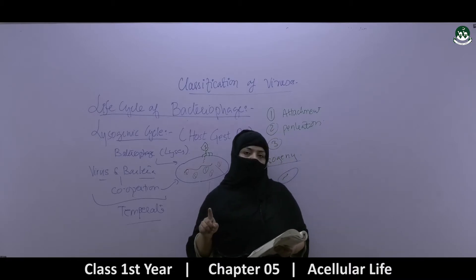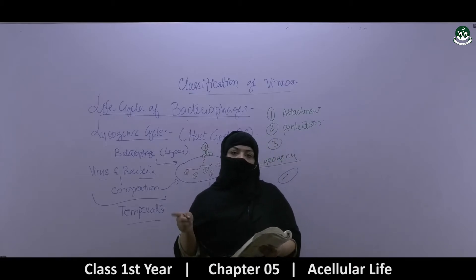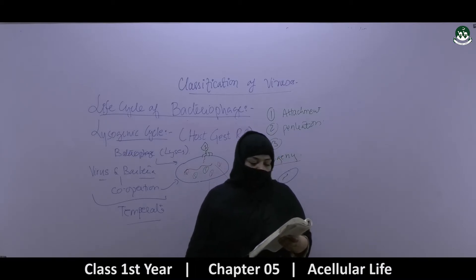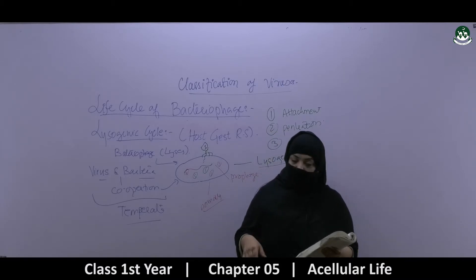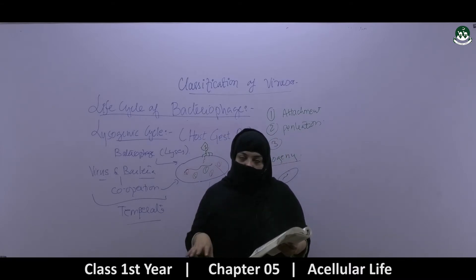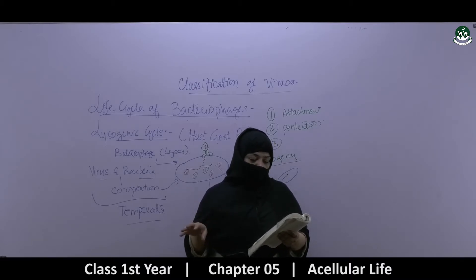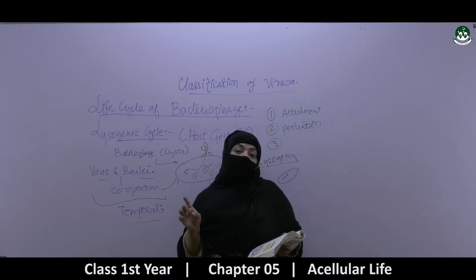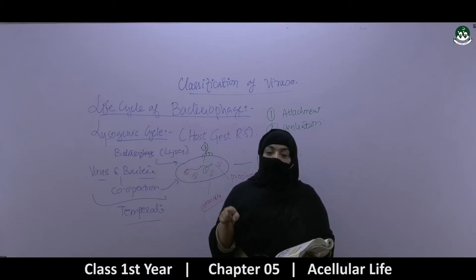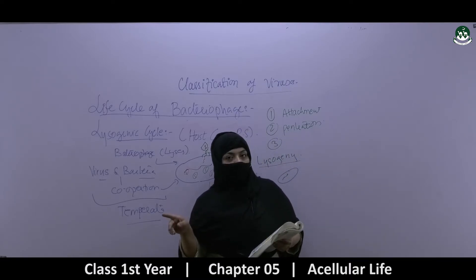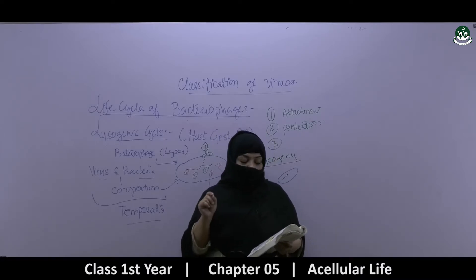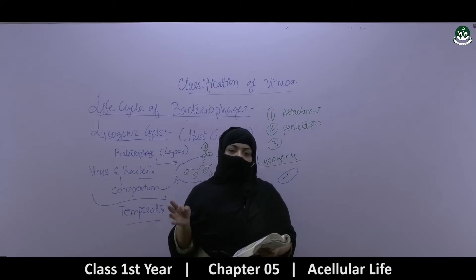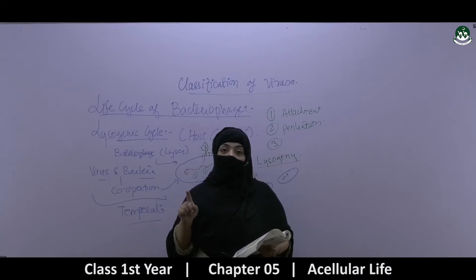Each genus includes only one species: influenza A, B, and C. The influenza A and C viruses cause infections in different vertebrates, while influenza B almost exclusively infects humans. So influenza A and C affect vertebrate organisms, whereas influenza B causes human influenza.